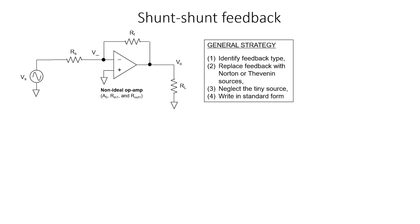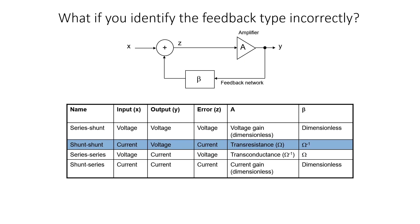First, let's identify the feedback type. We already know that it's shunt-shunt. If I were an ant crawling from the source towards the amplifier, it's clear that I would encounter the feedback network first — this is shunt. If I start at the load resistor and walk back towards the amplifier, I clearly cross the feedback path — this is shunt. In the shunt-shunt configuration, the input should be a current, the output should be a voltage. This is a trans-resistance amplifier, and A should have the units of ohms.